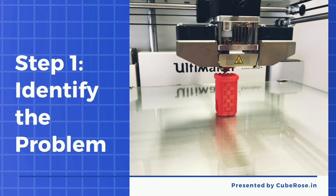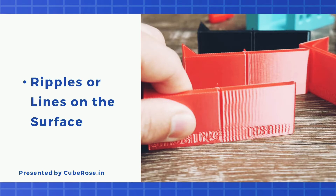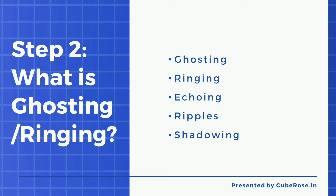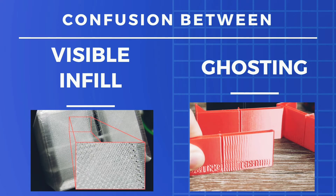What is ghosting, ripples, or ringing in 3D printing? When multiple ripples or lines are appearing on the surface which affects the outer look of the surface, it is mostly known as ringing. Ghosting is also known as ringing, echoing, ripples, or shadowing. Have a close look at the image where you can see the inconsistent ripples on the surface. Another confusing thing which must be cleared is the difference between ghosting and visible infill.